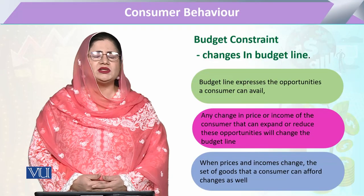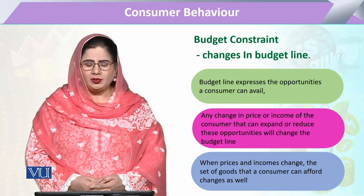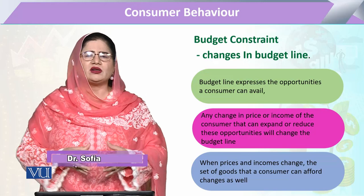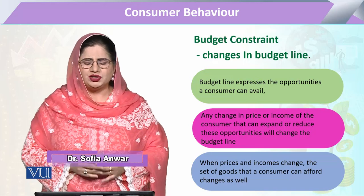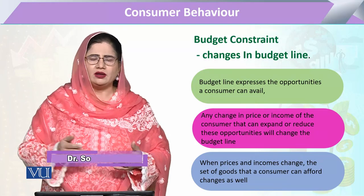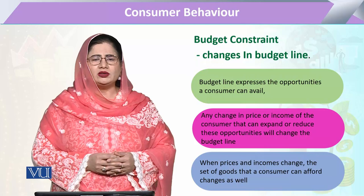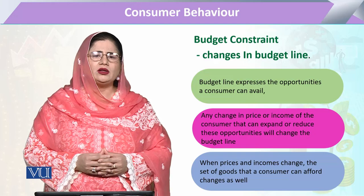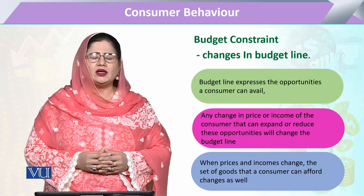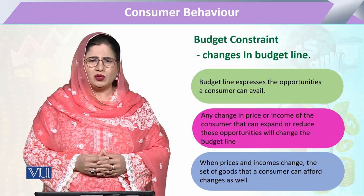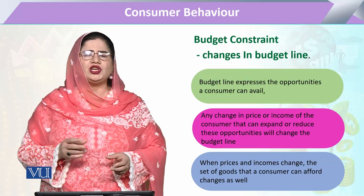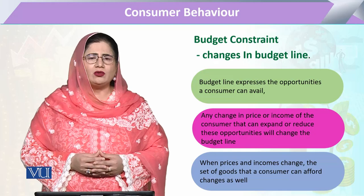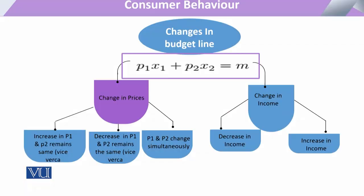This is pertaining to the changes in the budget line. If the consumer is having a budget in hand, which factors can cause the budget line to change, increase, or decrease? The budget line is equal to income and equal to the expenditure that the consumer is going to incur on the purchase of commodities. It represents the maximum opportunity the consumer is going to have on the purchase of commodities.